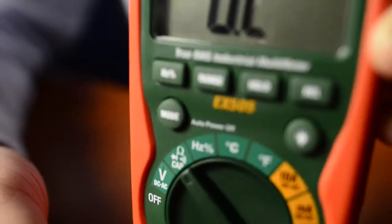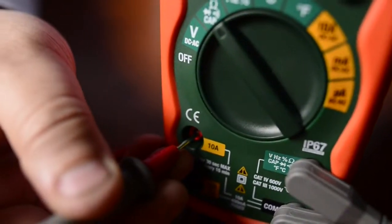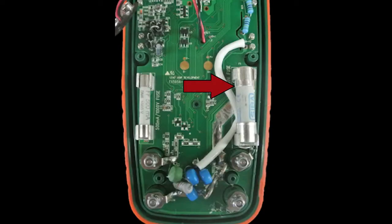If you get an OL or a very high resistance, it means that fuse is blown. You simply take the back cover off and you can replace whichever one you need to. The one on the right is the 10 amp fuse, the one on the left is the 400 milliamp fuse.